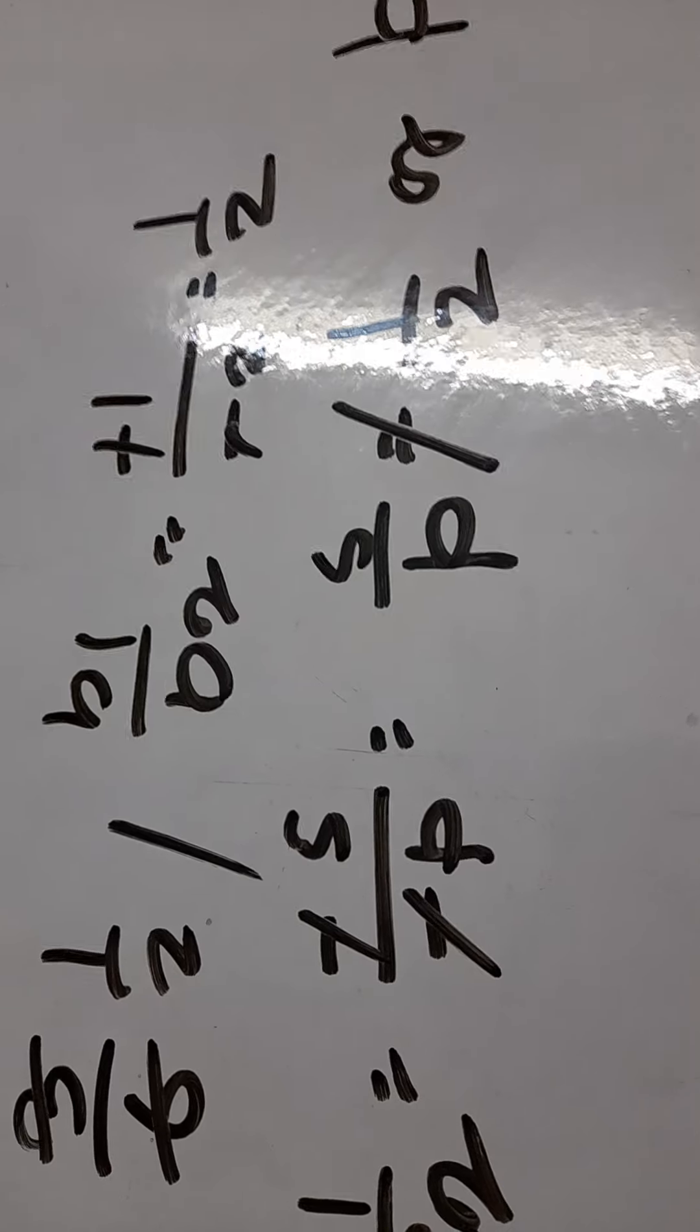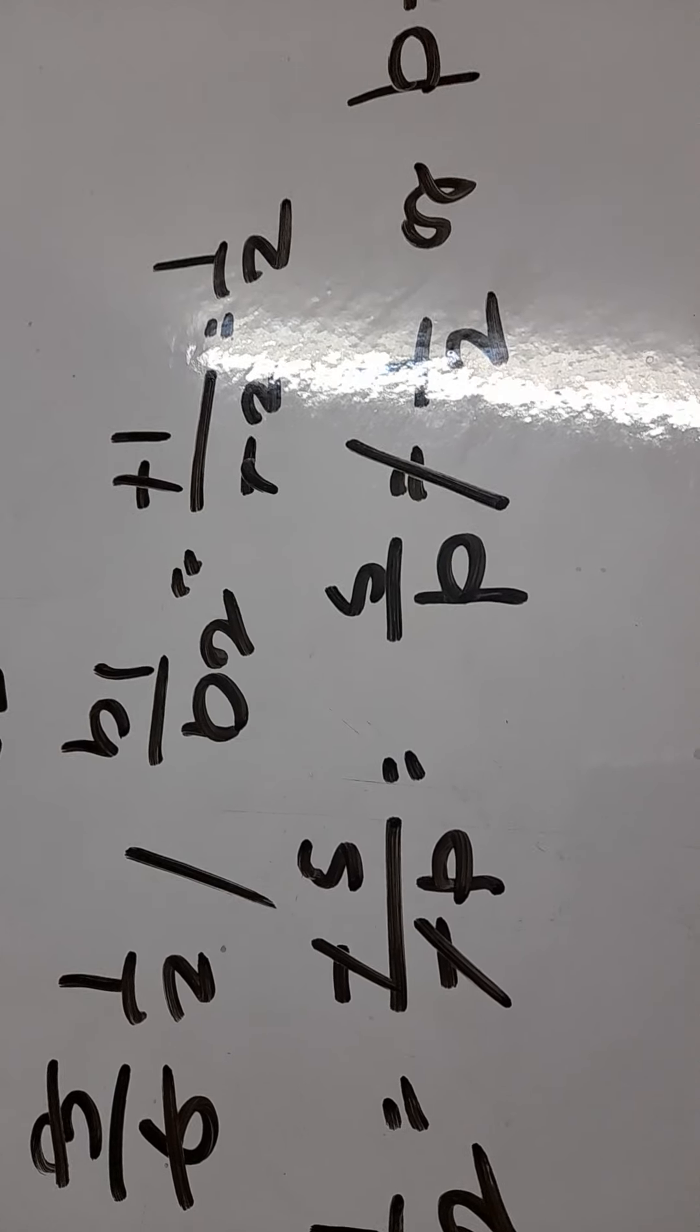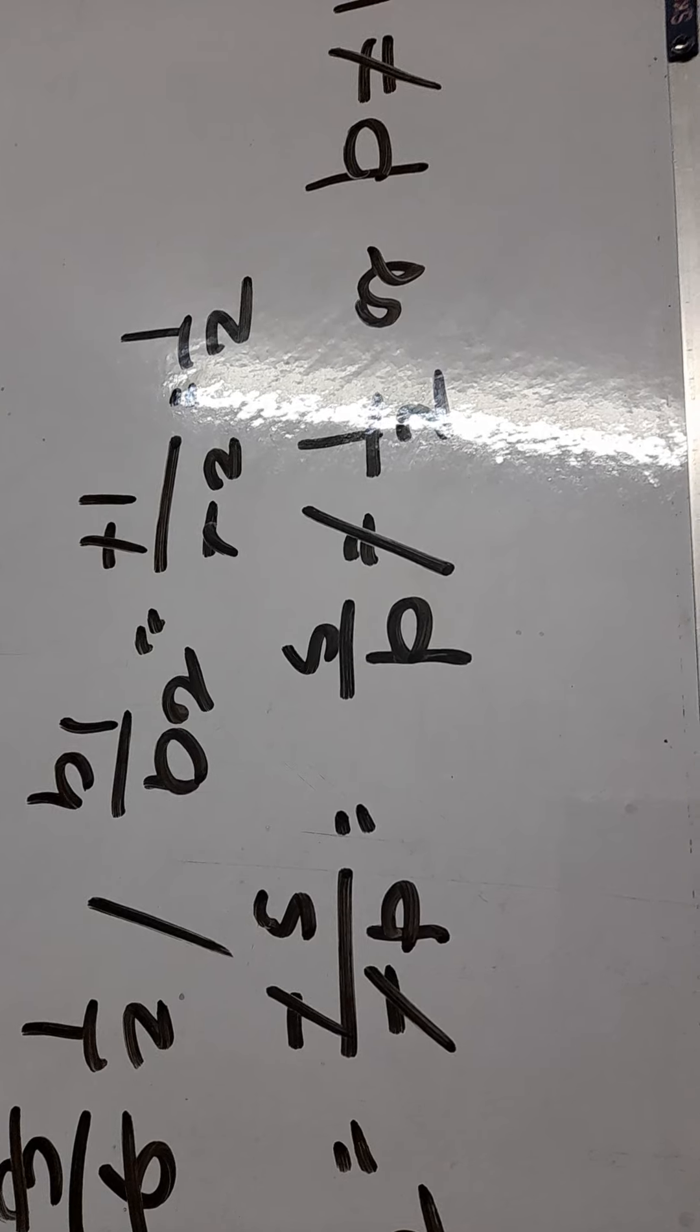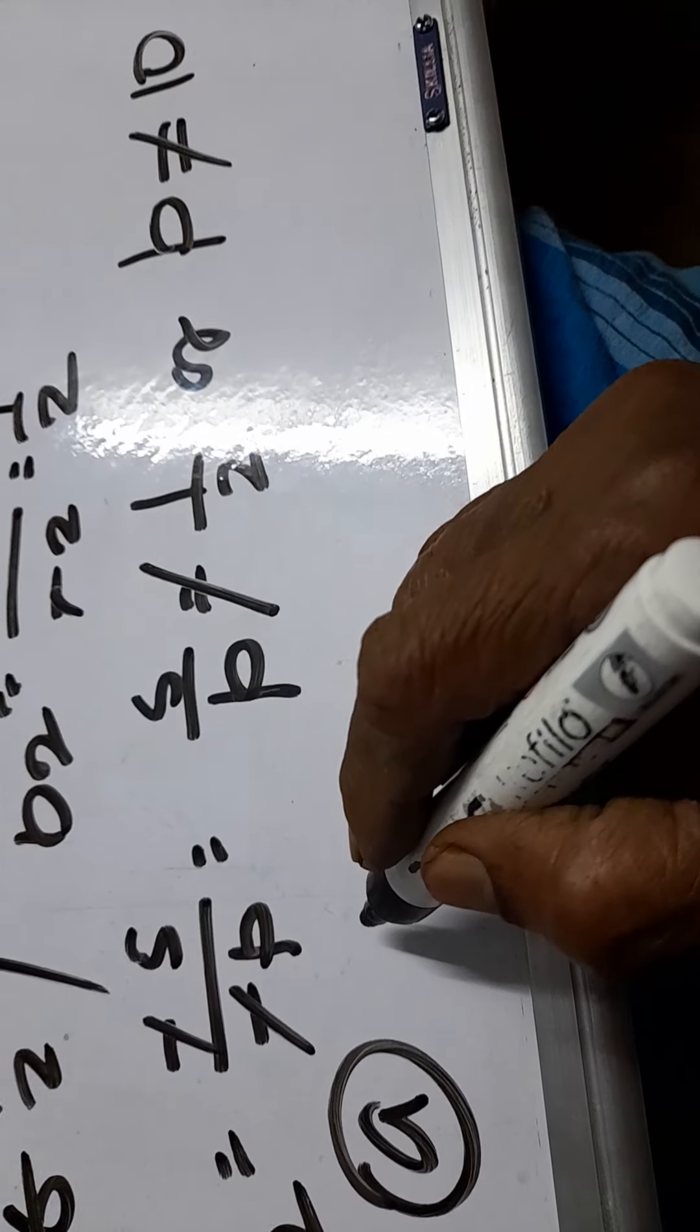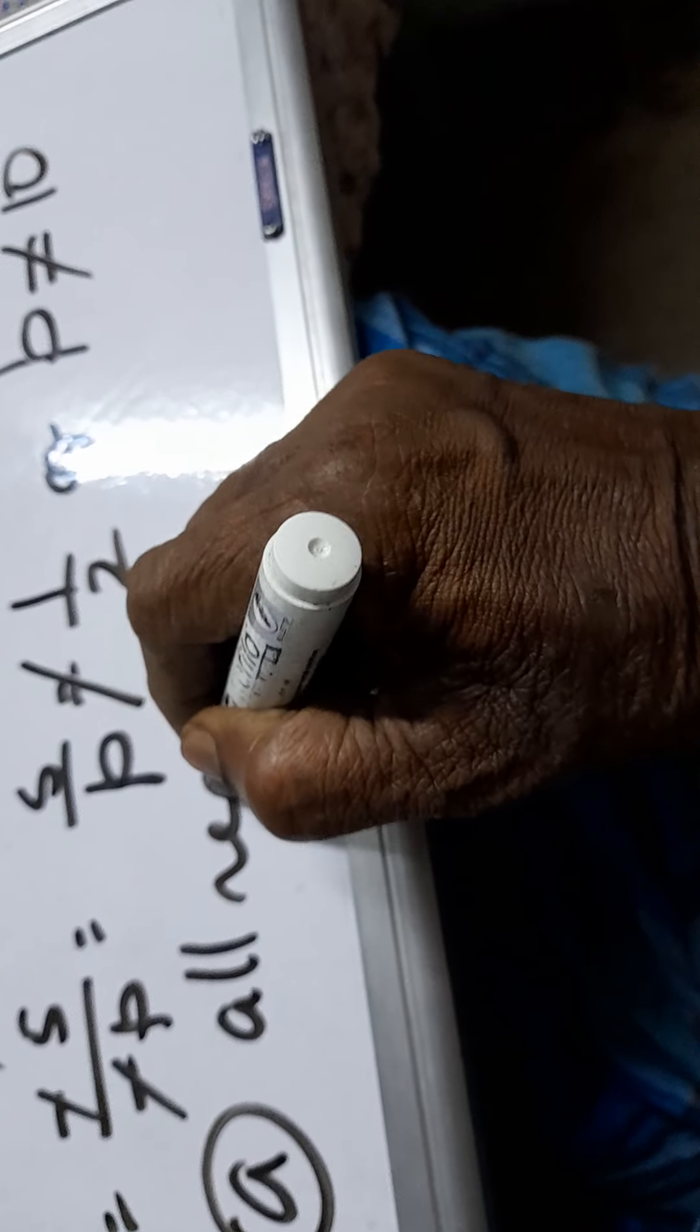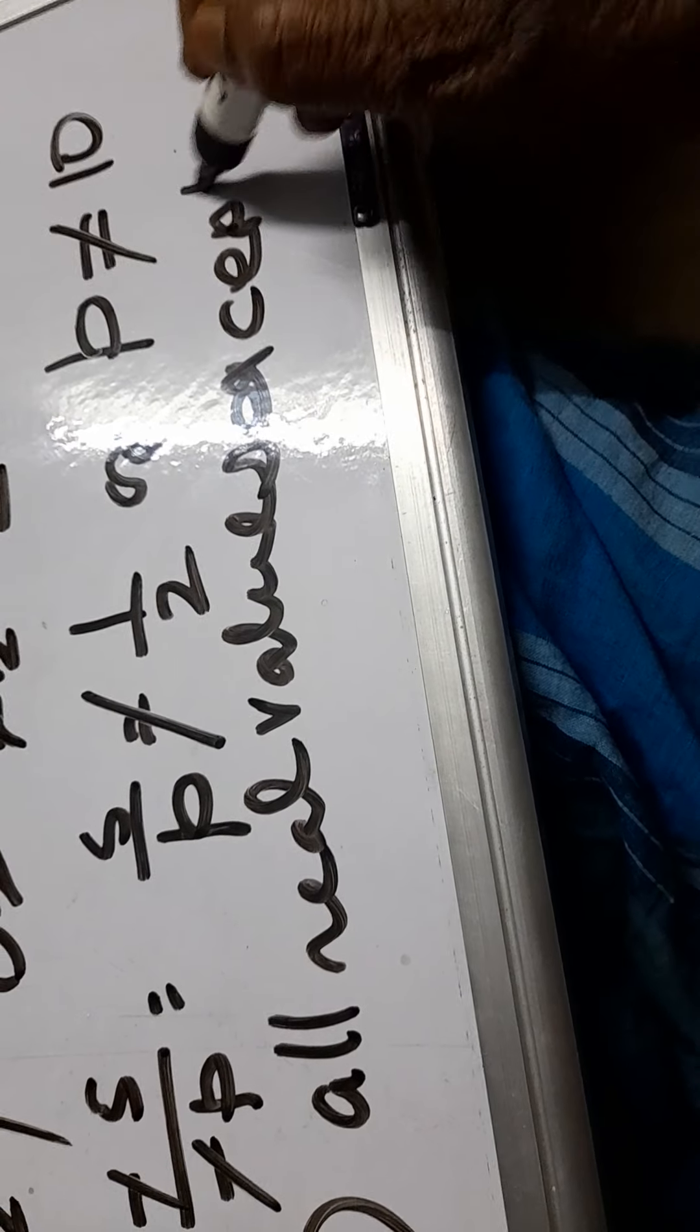So here the option, all the values except 10. All real values except 10, and this will be the answer.